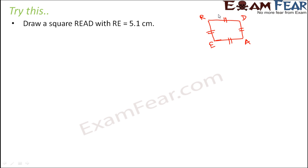So let us say if this is a square READ and if one side is 5.1 that means that all the other sides are also equal to 5.1 cm and in a square all angles are equal to 90 degrees. Now knowing all the angles and all the sides, it is very easy to draw the square.